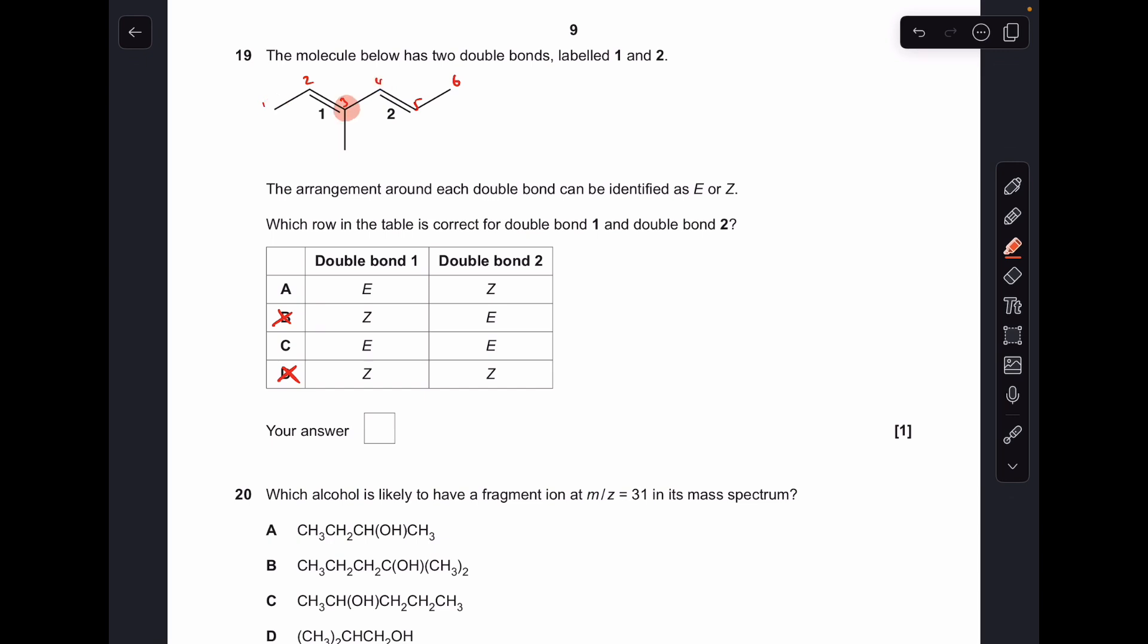And then if we move to carbon-4 for the other double bond, so we've got hydrogen and this group here. So there's priority there. And carbon-5, hydrogen and carbon from the methyl group, that's got priority. So that's E again. So it's double E. So it is C.